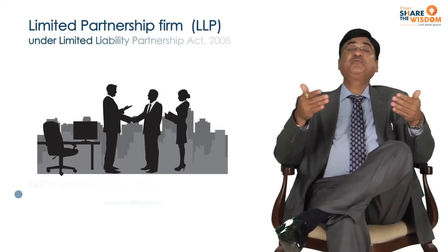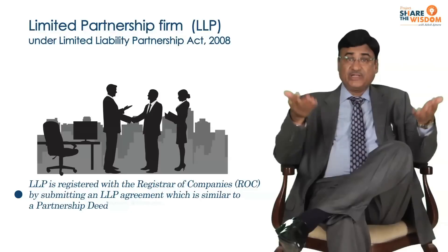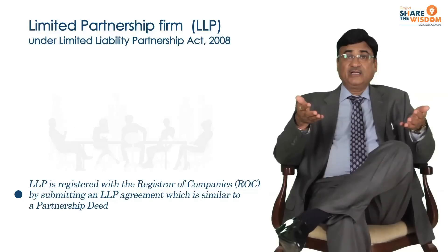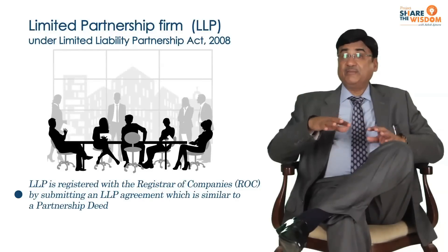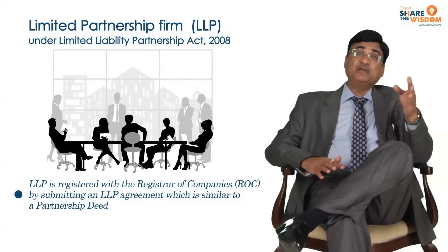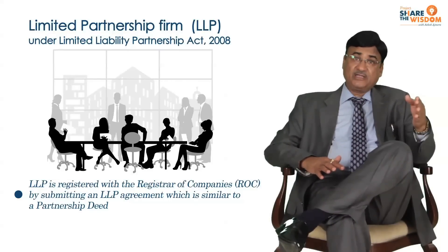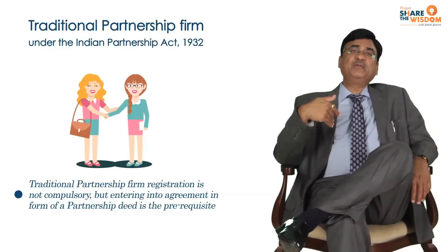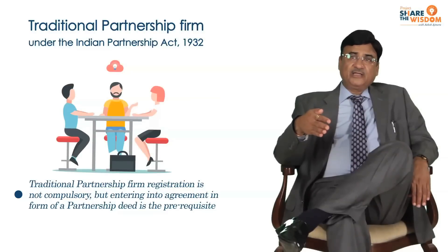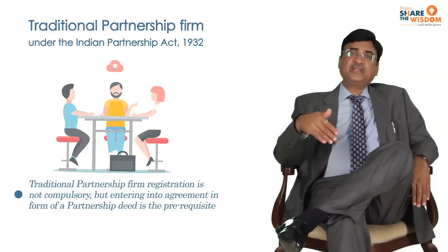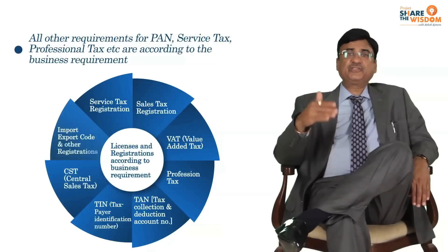But if you are more than one — two or three people together — and you want limited liability for each, then you have the option of a Limited Liability Partnership, that is LLP. But if you are a few family members and do not have any concern about unlimited liability being shared, you can form a partnership firm, which is registered with the registrar of firms.